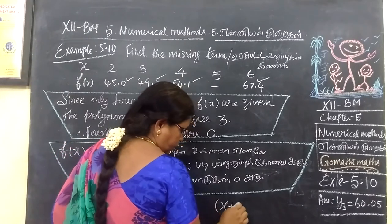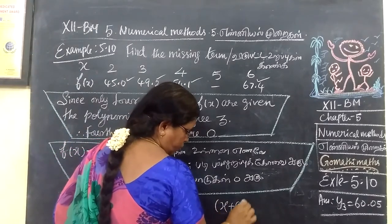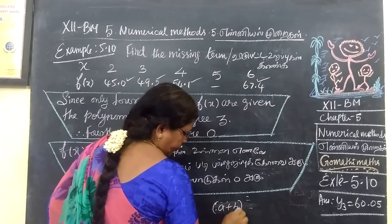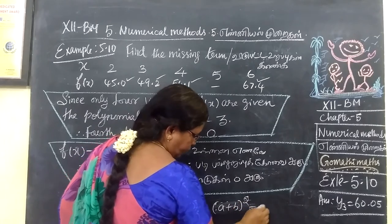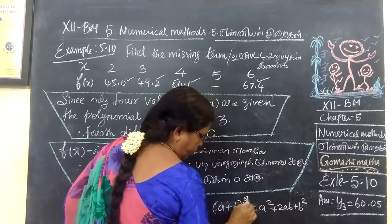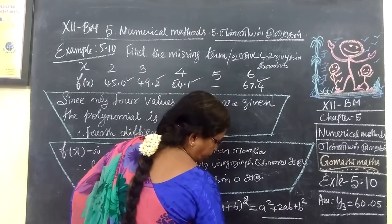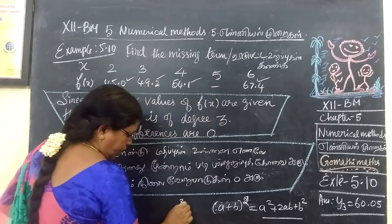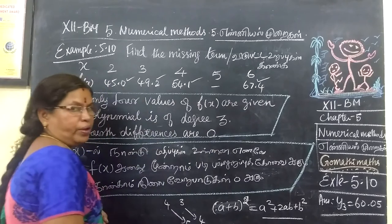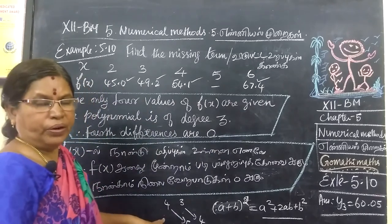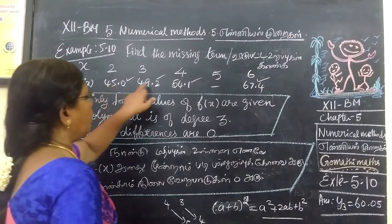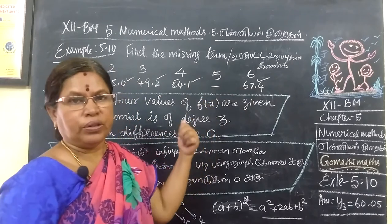Consider (A + B)² = A² + 2AB + B², which has 3 terms. Power 2 means 3 terms, power 3 means 4 terms, power 4 means 5 terms. Since we have 4 values, how much power is it? It is degree 3.